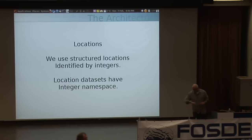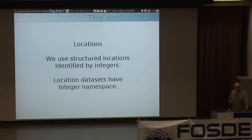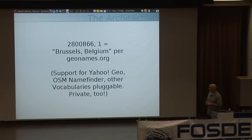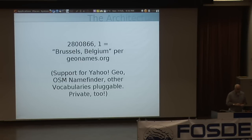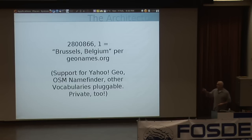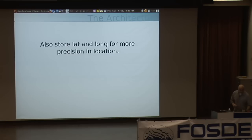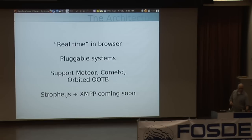Another interesting thing about our architecture is our location support. We use structured locations identified by integers, namespaced using another integer namespace. For example, Brussels, Belgium is stored as two integers — a long number and one saying it's a GeoNames ID. We support other databases of locations like Yahoo Geo, OSM NameFinder with WOE IDs, and even private systems — once again, pluggable. We also store latitude and longitude if needed. We support pluggable systems for real-time in the browser — a lot of the comet-based systems — and I'm really interested in using more XMPP, but we haven't had time to make that happen yet.